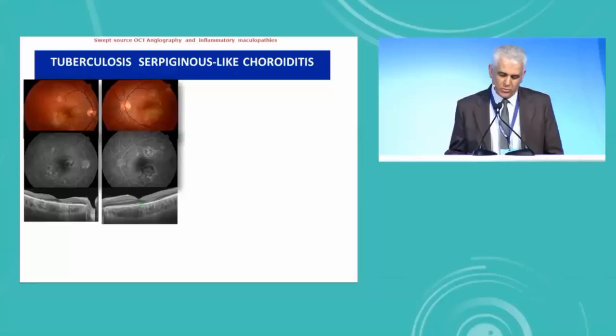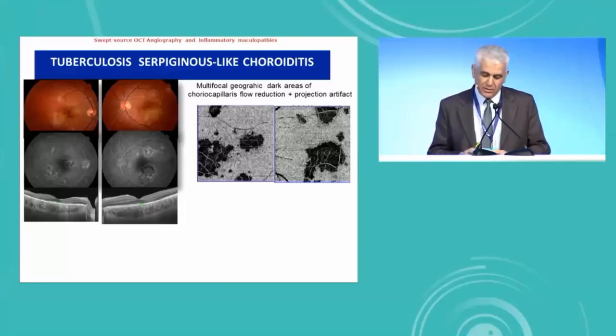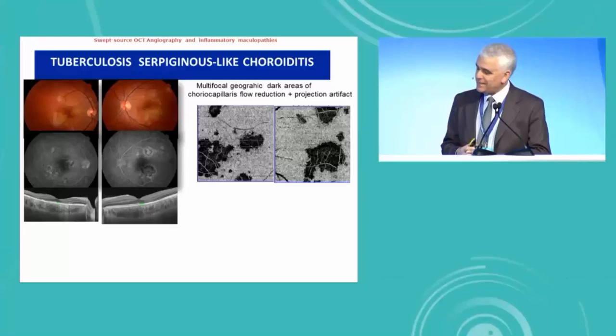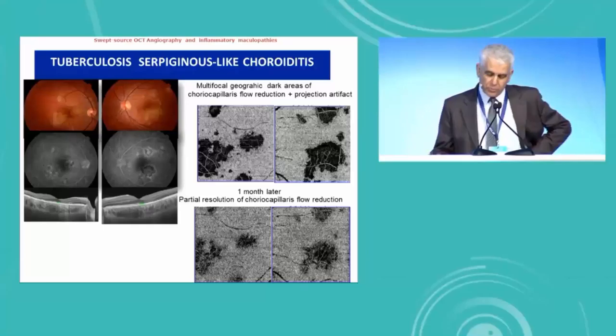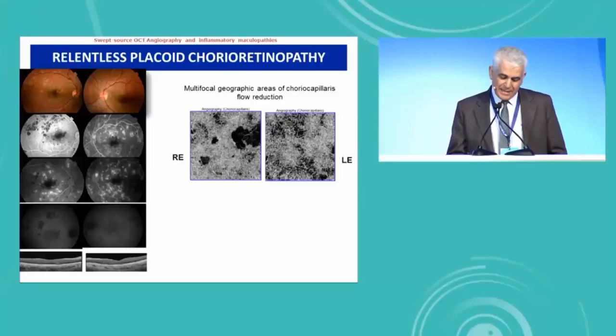This is a very typical case of MEWDS, because in MEWDS, OCT angiography normally shows normal findings. This next case is tuberculosis serpiginous-like choroiditis, and we can see multifocal geographic dark areas of choriocapillaries flow reduction associated with projection artifact, and one month after presentation, partial resolution of choriocapillaries flow reduction in both eyes.